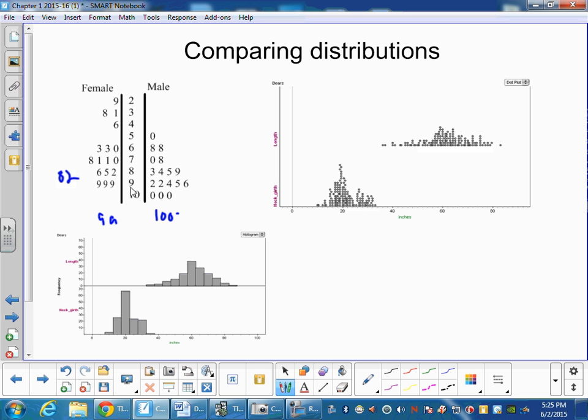This is still the stem and these are leaves, and so that would be 60 and 46 and so on. So that's a back-to-back stem plot.